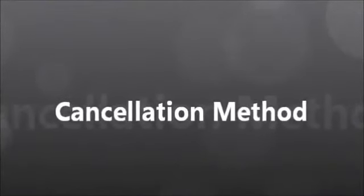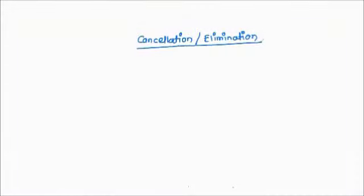Let's talk about the cancellation method. Imagine a seesaw where on one side I have a boy sitting with a mobile, and on the other side also a boy sitting with a mobile. Both are the same mobile, both boys weigh the same. So in that case the seesaw would be balanced.